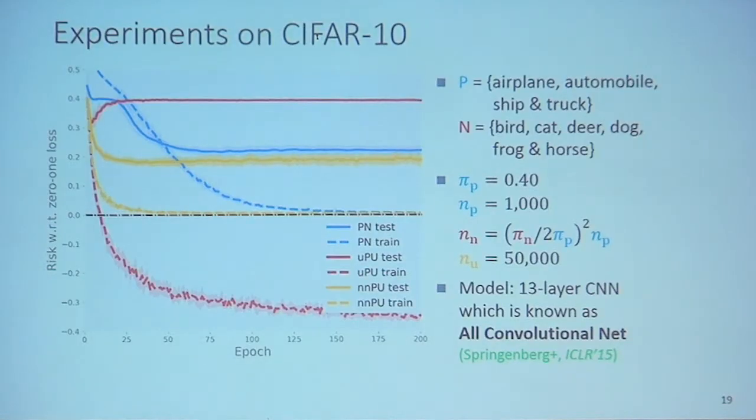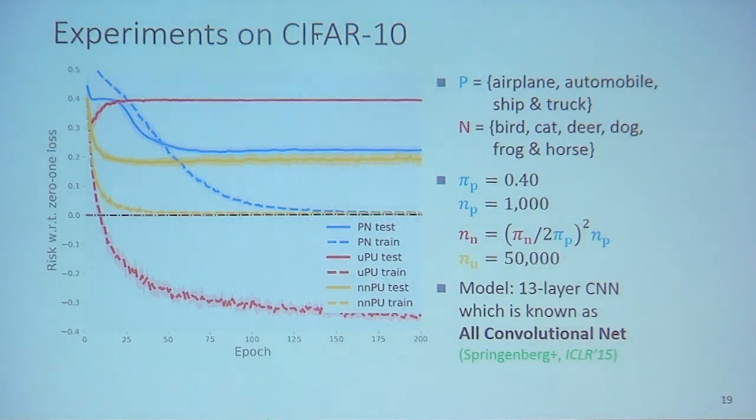An audience member asks: in your dataset you split it so it is almost half positive and half negative — what if in cases where there are very few negatives? The speaker responds: in our experiments, π_P is almost half. In that case, the ERM risk is still a good performance measure. If π_P is very small, say 0.01, or very large, we should not minimize the risk but instead consider AUC maximization.